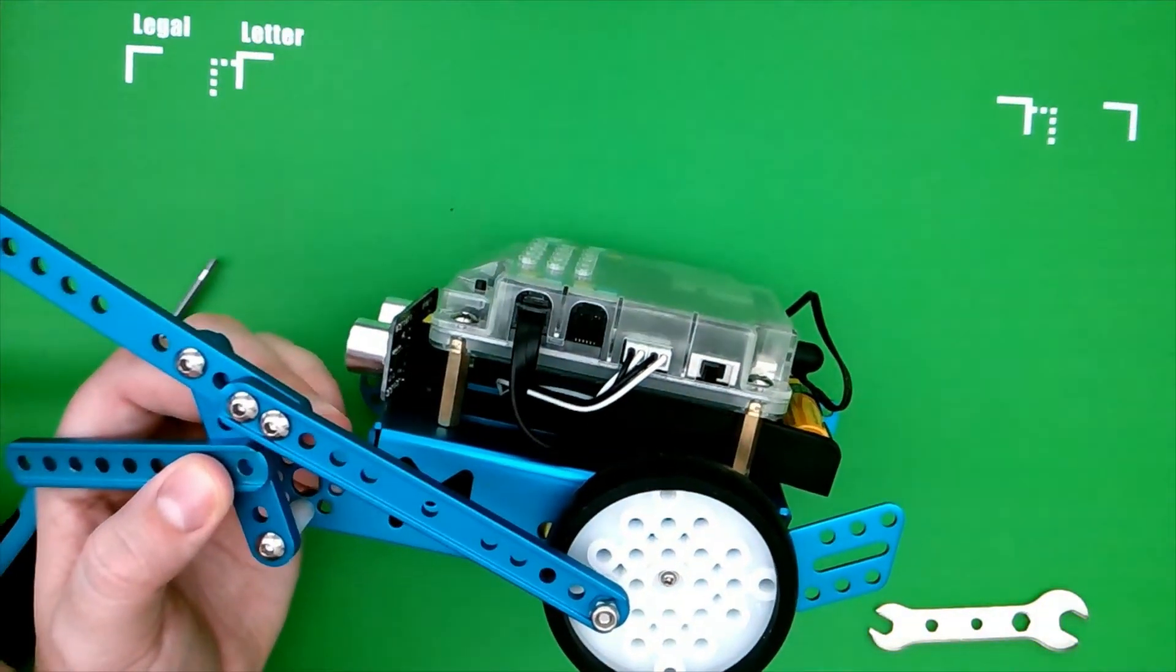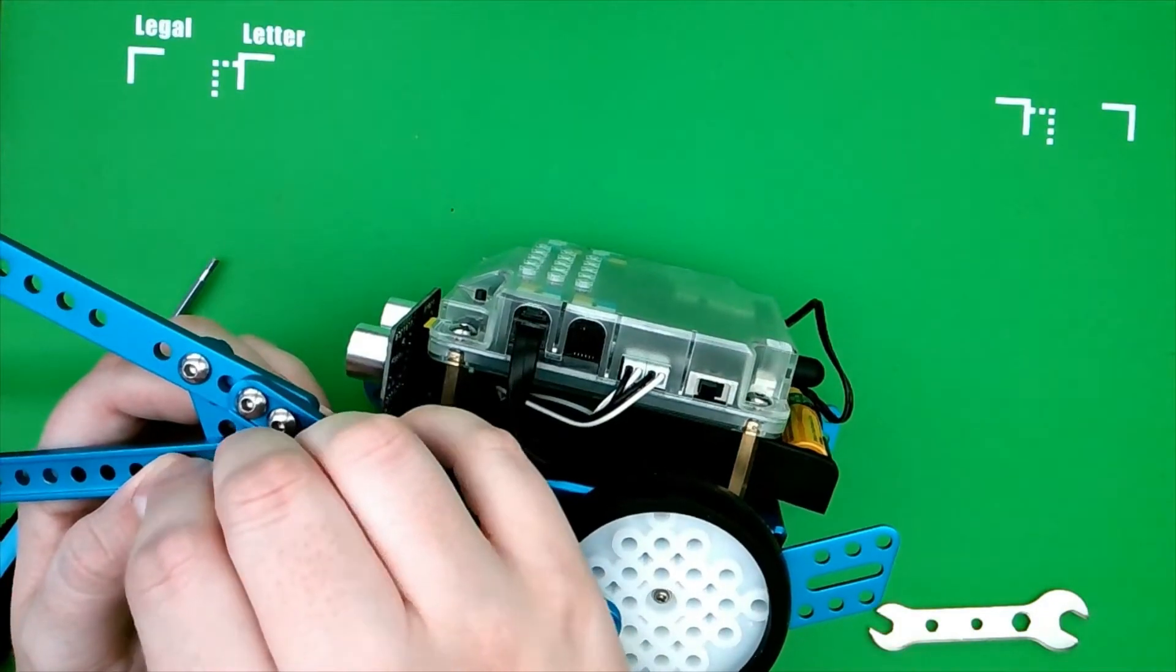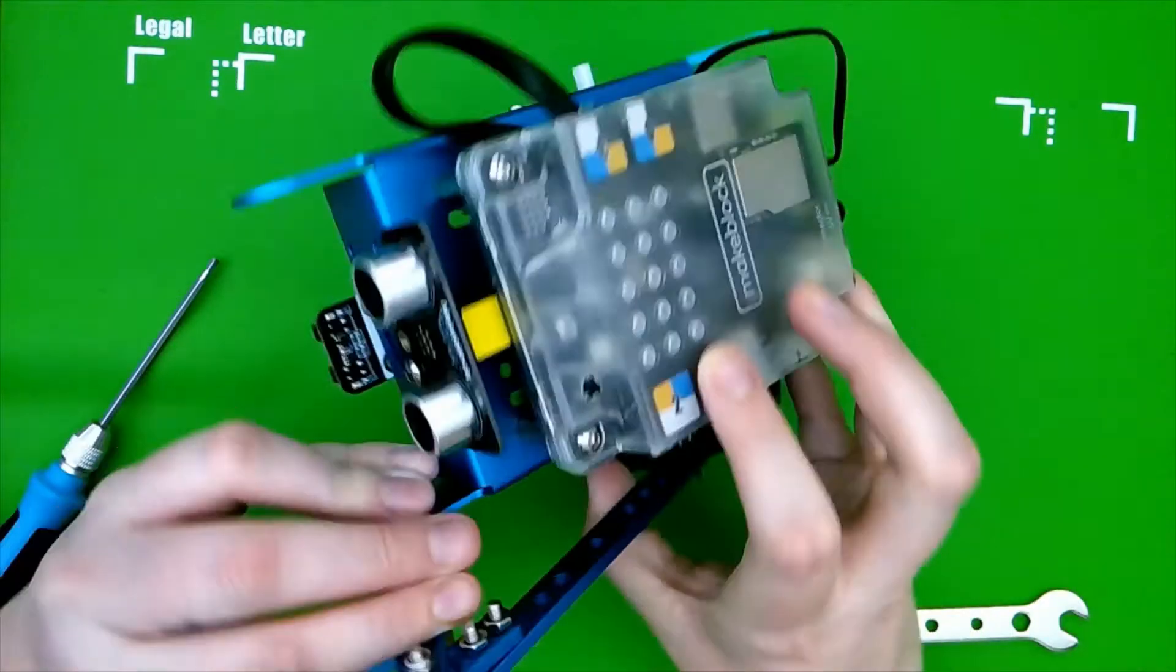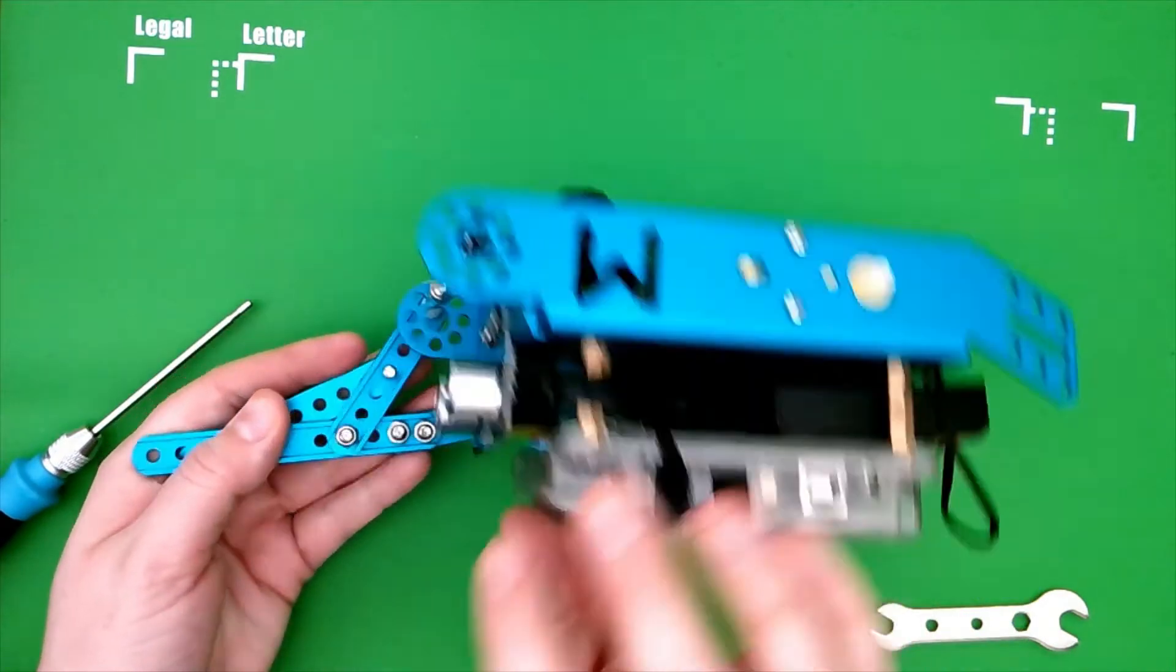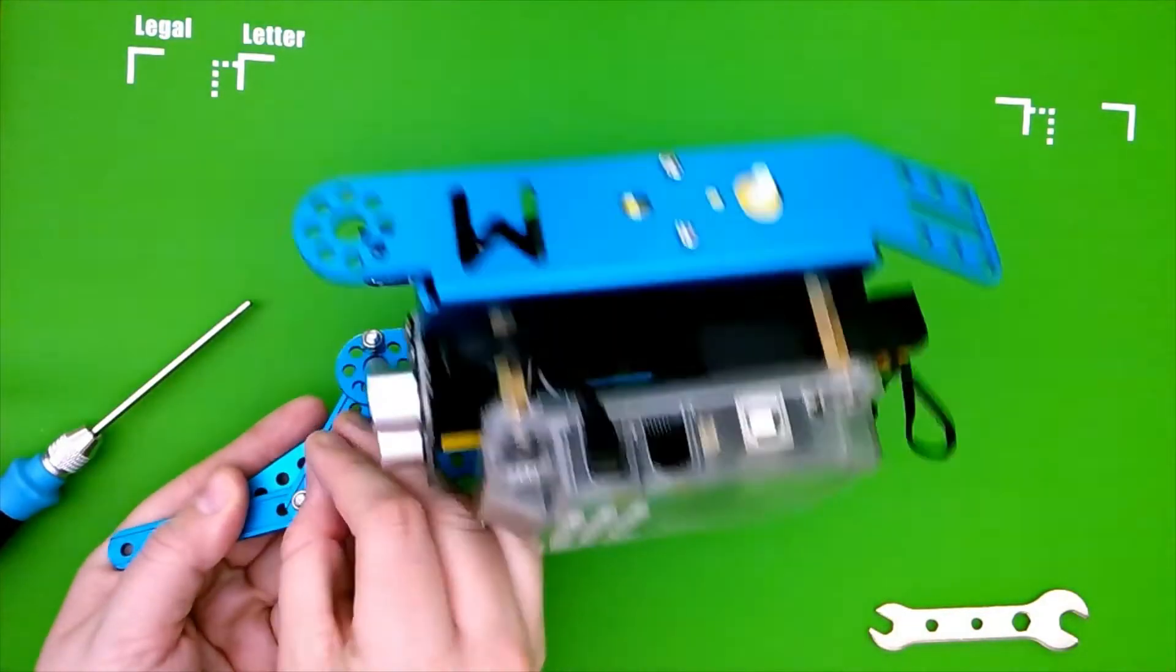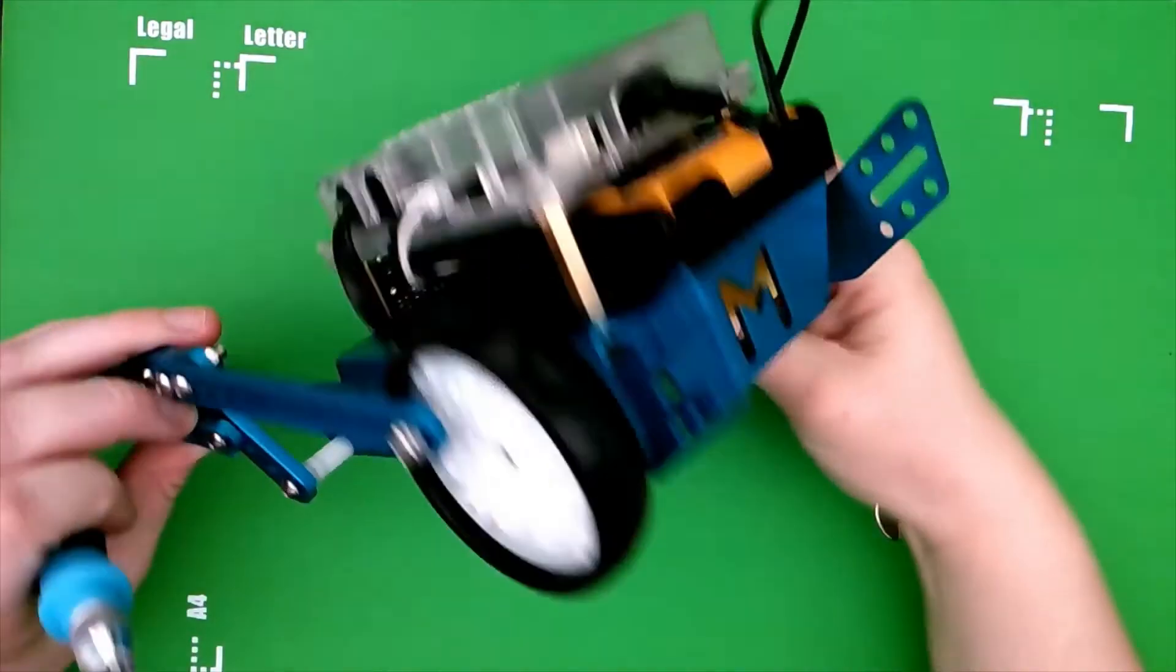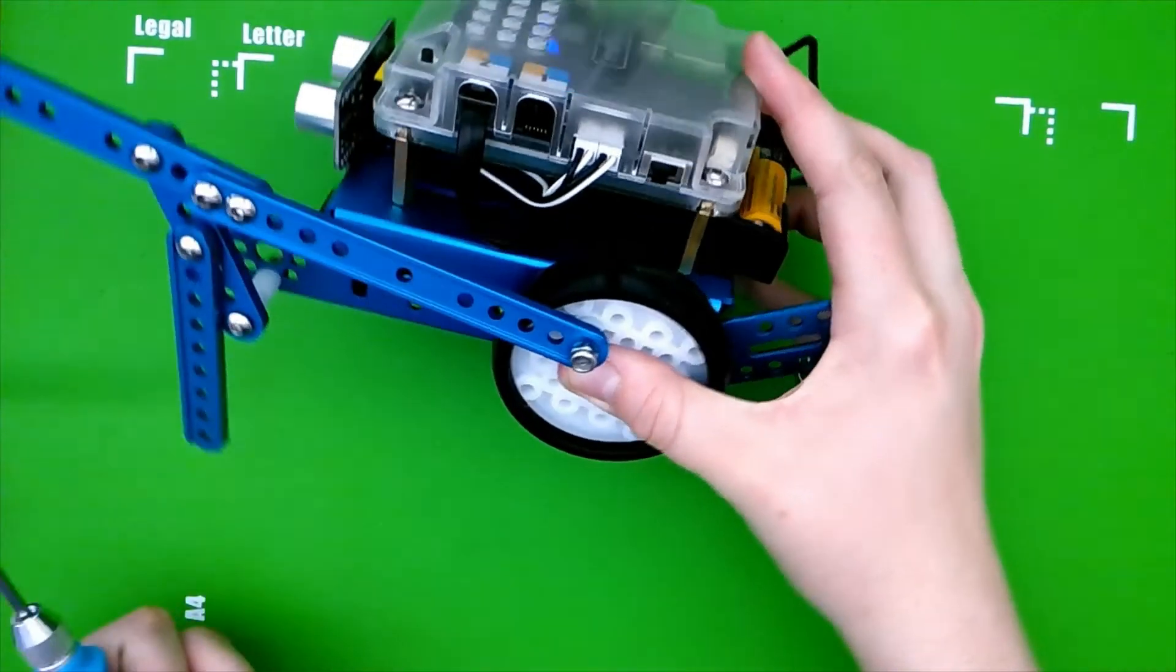You're going to attach this using a 14-millimeter screw just like that, and then you're going to screw on another lock nut. Okay, it should be about like that. Keep that pretty loose, it can hang.